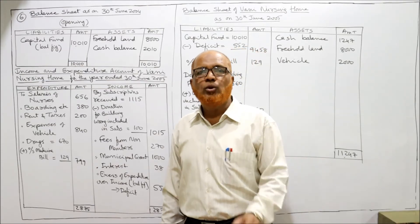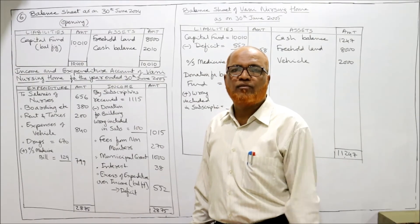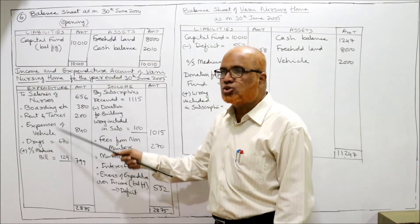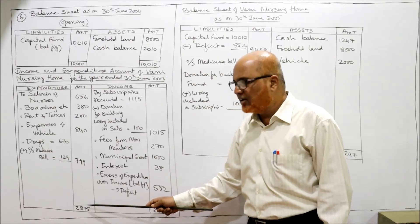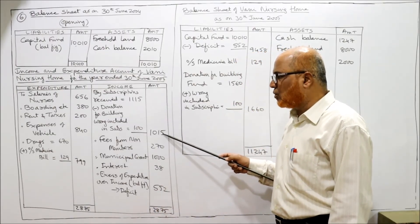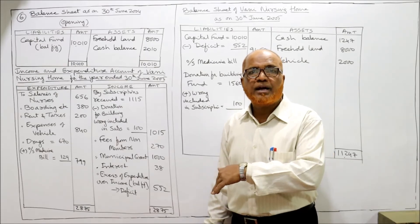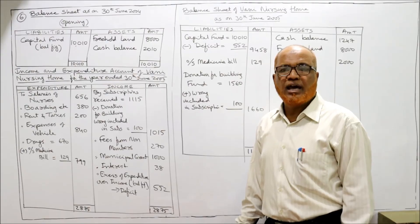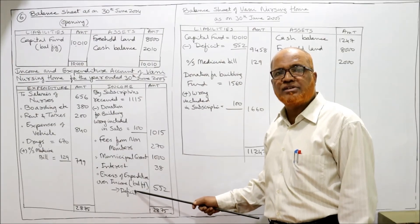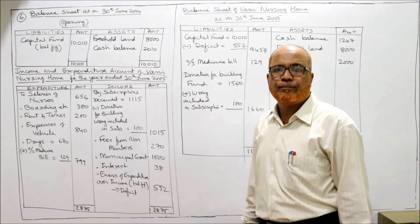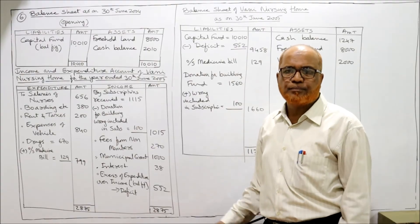When we find the totals of debit and credit sides separately, the debit side (expenditure) is more — this is the first problem where we have a deficit. Total expenditure is 2,008.75. Subtracting the income items gives a balancing figure of 552, which is the deficit — excess of expenditure over income. Deficit is subtracted from the capital fund, just as a net loss is subtracted from capital.